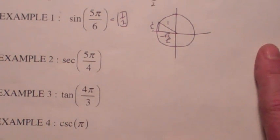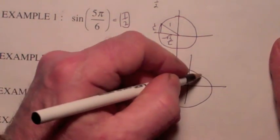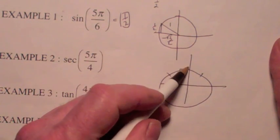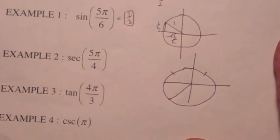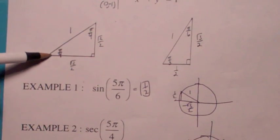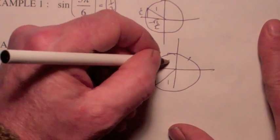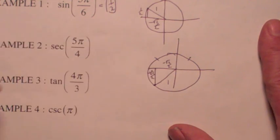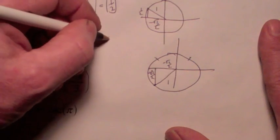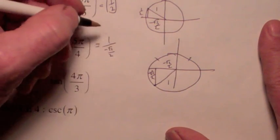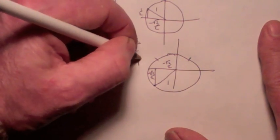Secant of 5 pi over 4 — draw a picture. Where is 5 pi over 4? Counting by pi over 4's: pi over 4, 2 pi over 4, 3 pi over 4, 4 pi over 4 — so 5 pi over 4 is in the third quadrant. Use the pi over 4 reference triangle in the third quadrant: x is negative radical 2 over 2, y is negative radical 2 over 2. The secant is 1 over the cosine, so it's 1 over negative radical 2 over 2, which flips to negative 2 over radical 2, which reduces to negative radical 2.